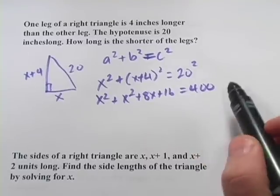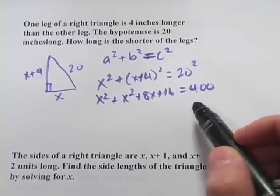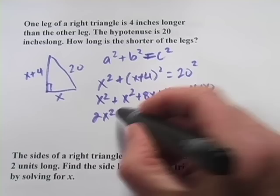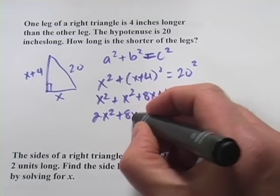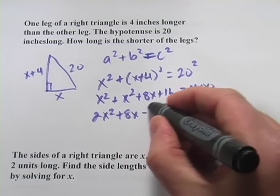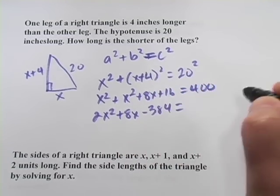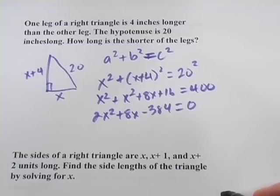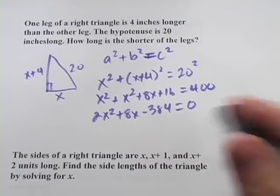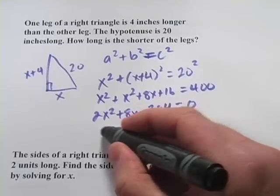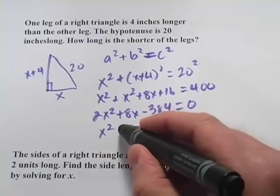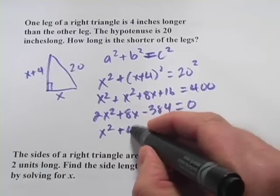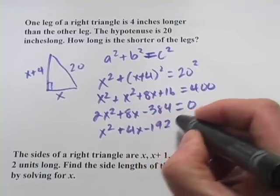We'll combine our like terms and we'll get everything over on the left here to set this equal to 0. So we've got 2x squared plus 8x, and that would be minus 384 equals 0. And I can take a 2 out of everything, so let's go ahead and do that. Divide both sides by 2: x squared plus 4x minus 192 equals 0.